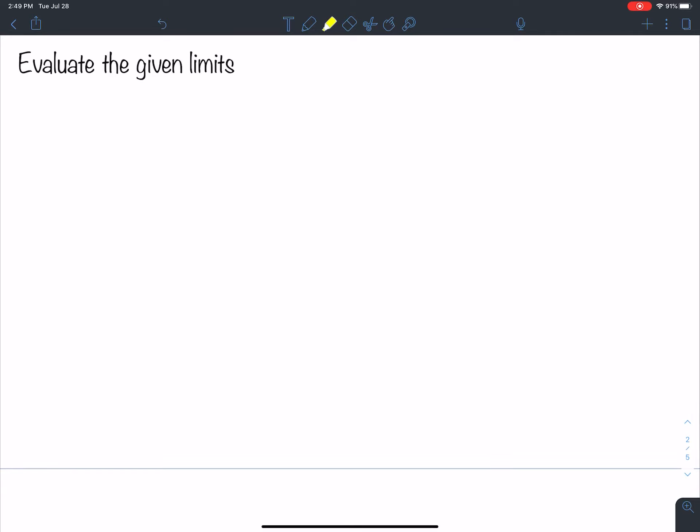So here we're going to evaluate given limits. We first have a limit as x goes to 2 of 1 minus x squared plus e to the x.